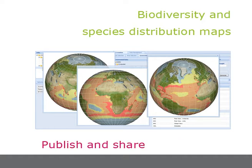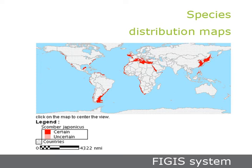Finally, users can publish and share maps and other outputs within the VRE. In the future, users will also be able to generate maps using alternative modeling approaches or environmental input data. Moreover, they will be able to compare outputs with other species distribution maps created directly by experts, such as those available through the FAO VGIS system.